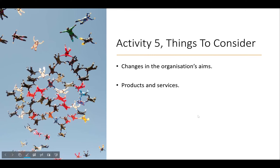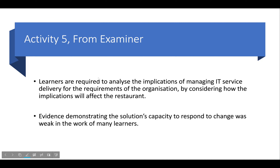We also need to consider changes in the organization's aims, products and services — for example, if the restaurant completely changes what it offers. Can we accommodate for most of this? This is directly from the examiner: learners are required to analyze the implications of managing IT service delivery for the requirements of the organization, by considering how the implications will affect the restaurant. Evidence demonstrating the solution's capacity to respond to change was weak in the work of many learners.